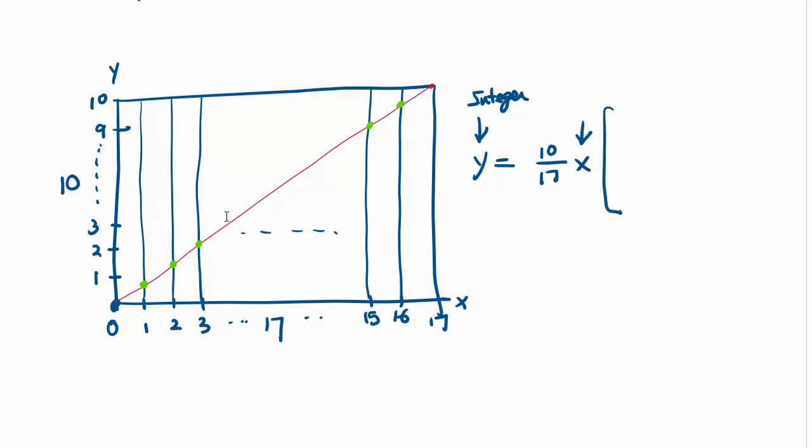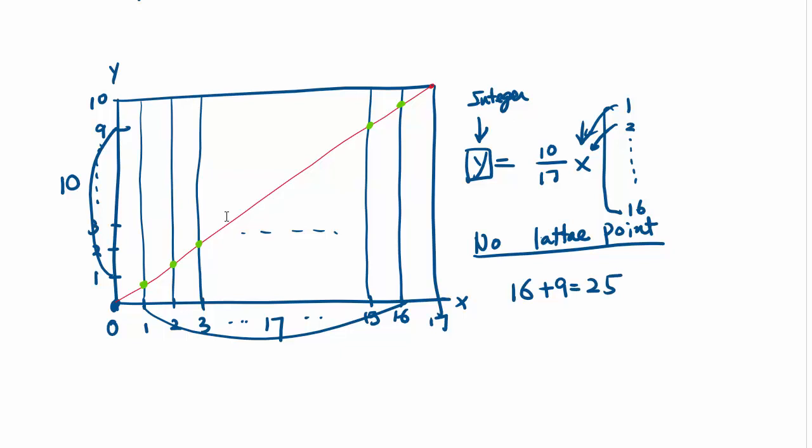There is no lattice point, so that means there is no overlap. Over here, 16 intersections. Here to here, what is there? 9 intersections. So 16 plus 9 is 25 points of intersection. So the number of tiles is how many? 25 plus 1 is 26. That's it.